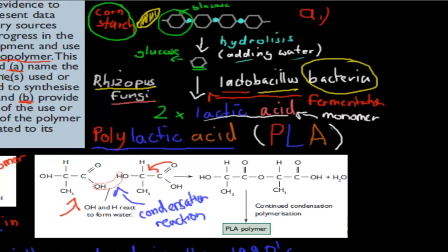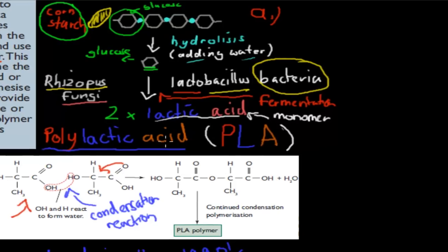That covers Part A — the production steps: start with cornstarch, use hydrolysis to make glucose, ferment using rhizopus fungi or lactobacillus bacteria to produce lactic acid monomers, then join them via condensation reaction to make the condensation polymer — polylactic acid.